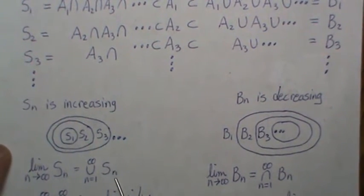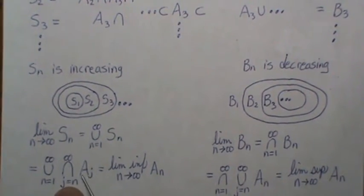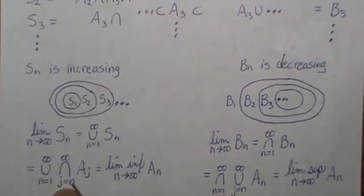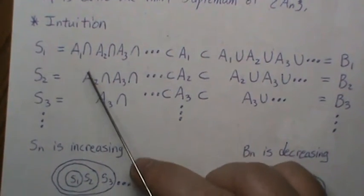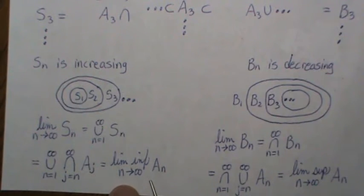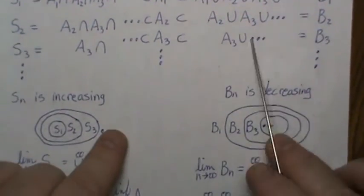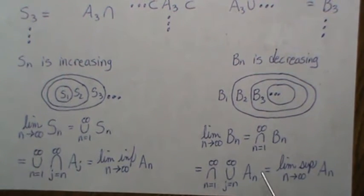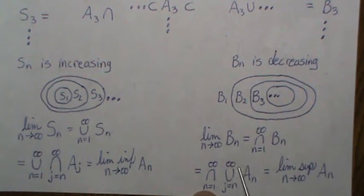If we replace what S_n is — recall S_n was the intersection of all sets starting at index n, i.e., j = n to infinity — that is the limit infimum of A_n. Similarly, substituting what we know about B_n, which is the union of those sets starting at n, we get: the union over n, then union from j = n to infinity of A_j. That is called the limit supremum of A_n.